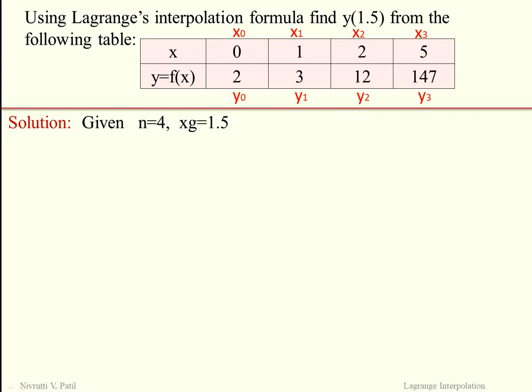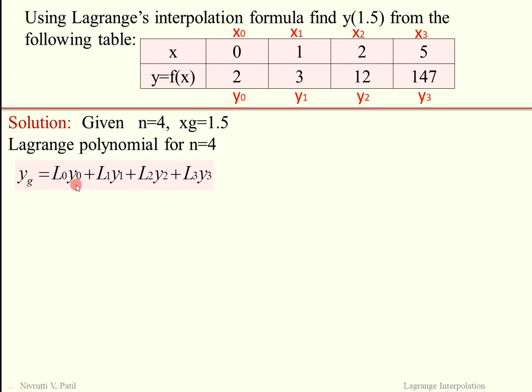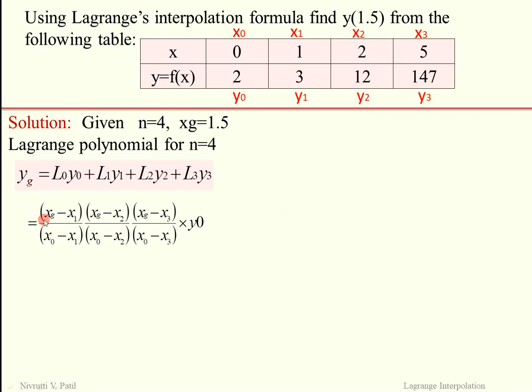Using these notations, we can find the value of YG at a given XG. The formula for 4 data points is: YG = L0·Y0 + L1·Y1 + L2·Y2 + L3·Y3. This formula is written for N minus 1 terms — since N equals 4, it goes up to the third term (L3 and Y3). L0, L1, L2, and L3 are the Lagrange's terms, which can be found using the formula: (XG − X1)(XG − X2)(XG − X3) / (X0 − X1)(X0 − X2)(X0 − X3).